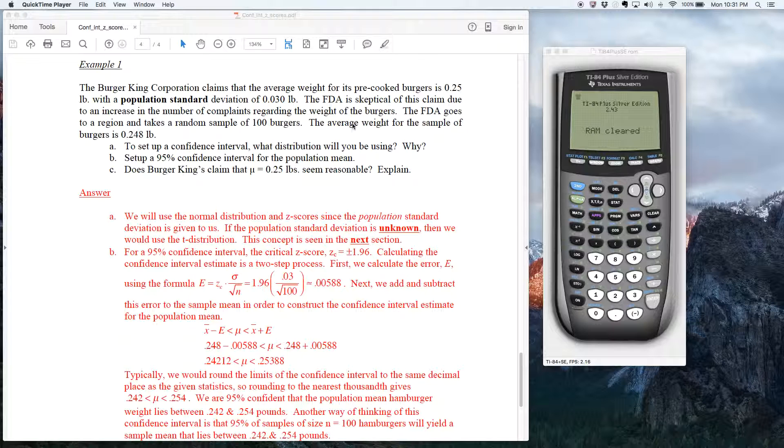The average weight for the sample, so that average for the sample, that's a sample mean x bar, is 0.248 pounds, which is slightly under the 0.25, the quarter pound mark that Burger King's claiming.